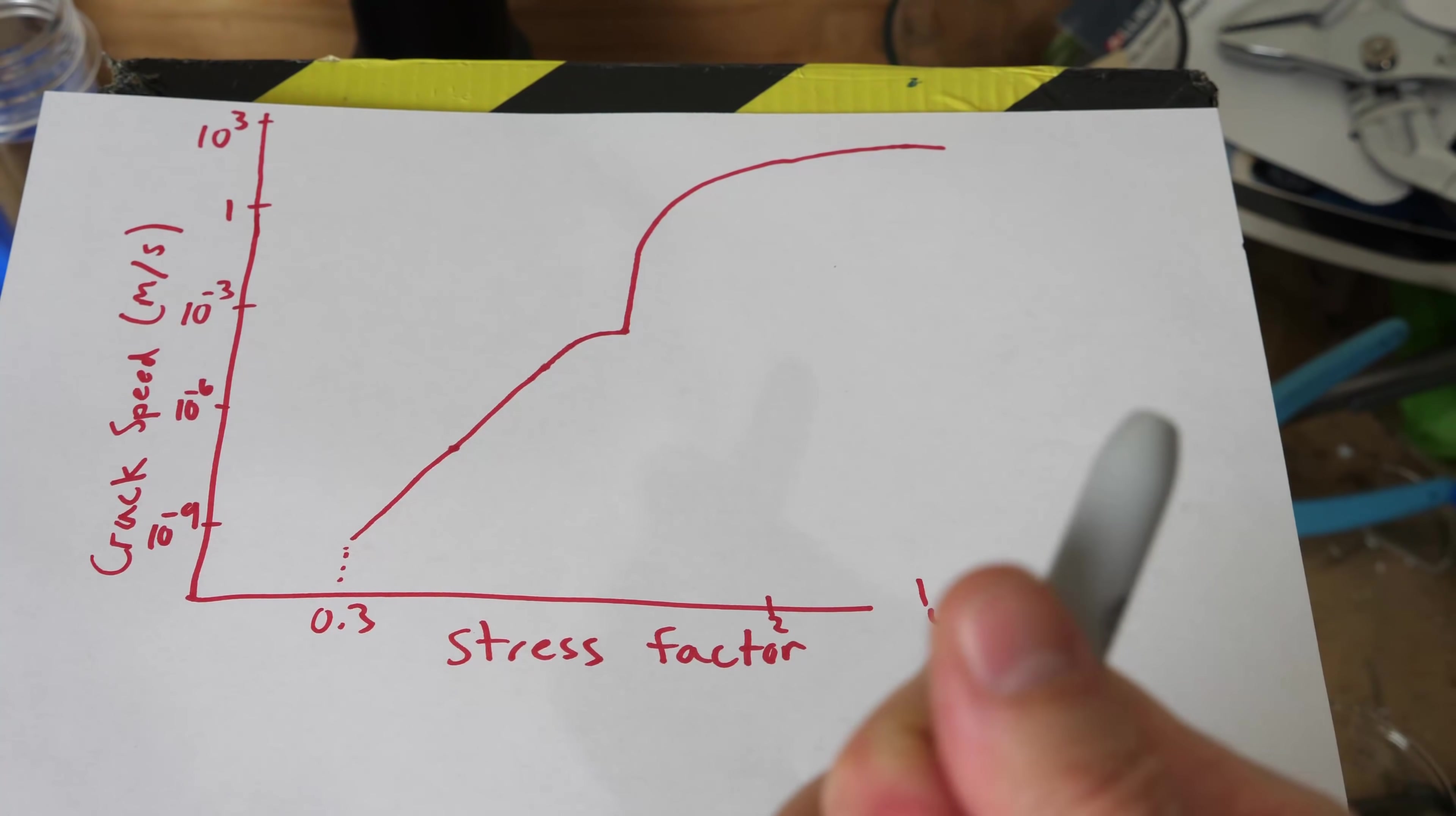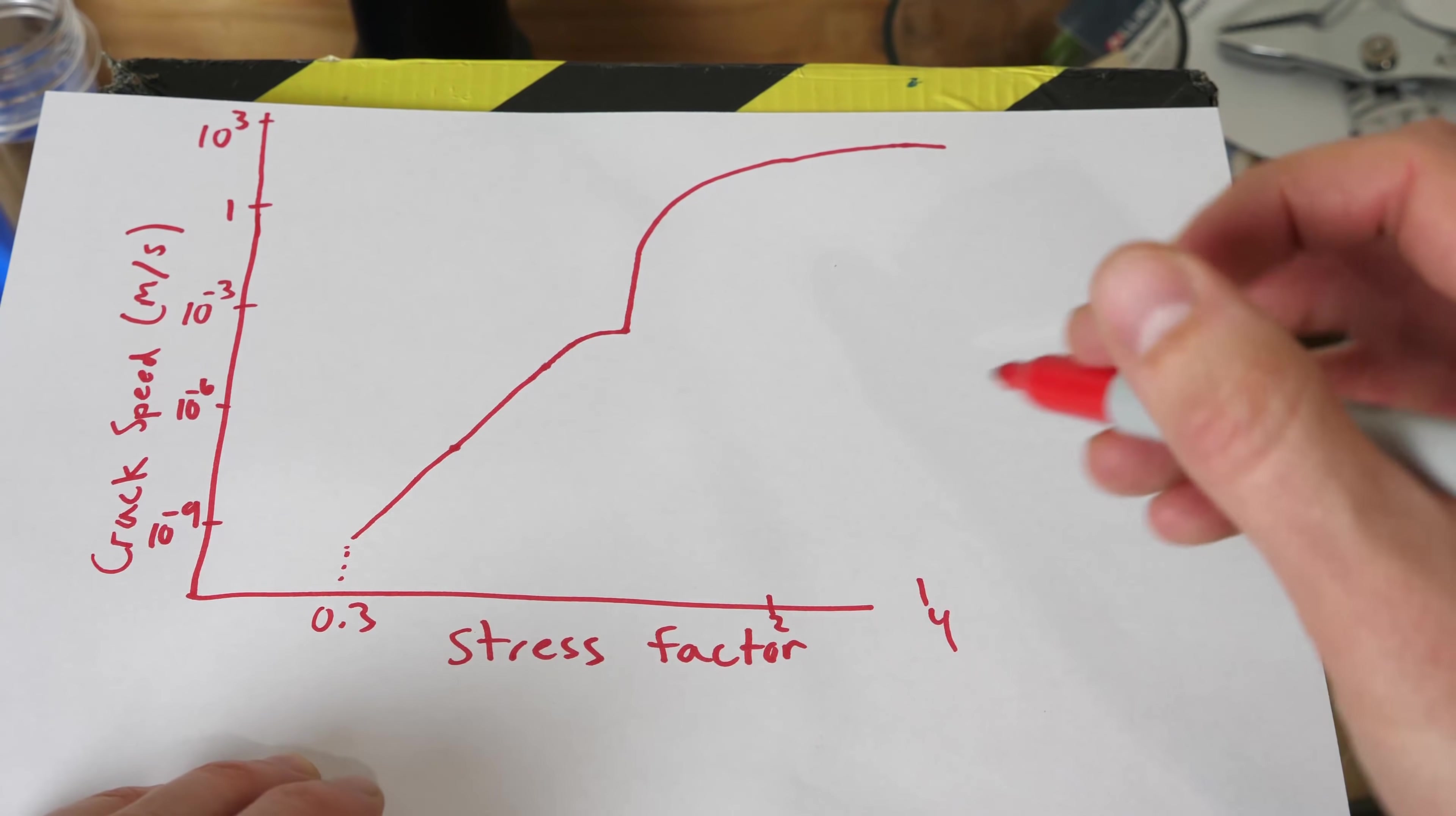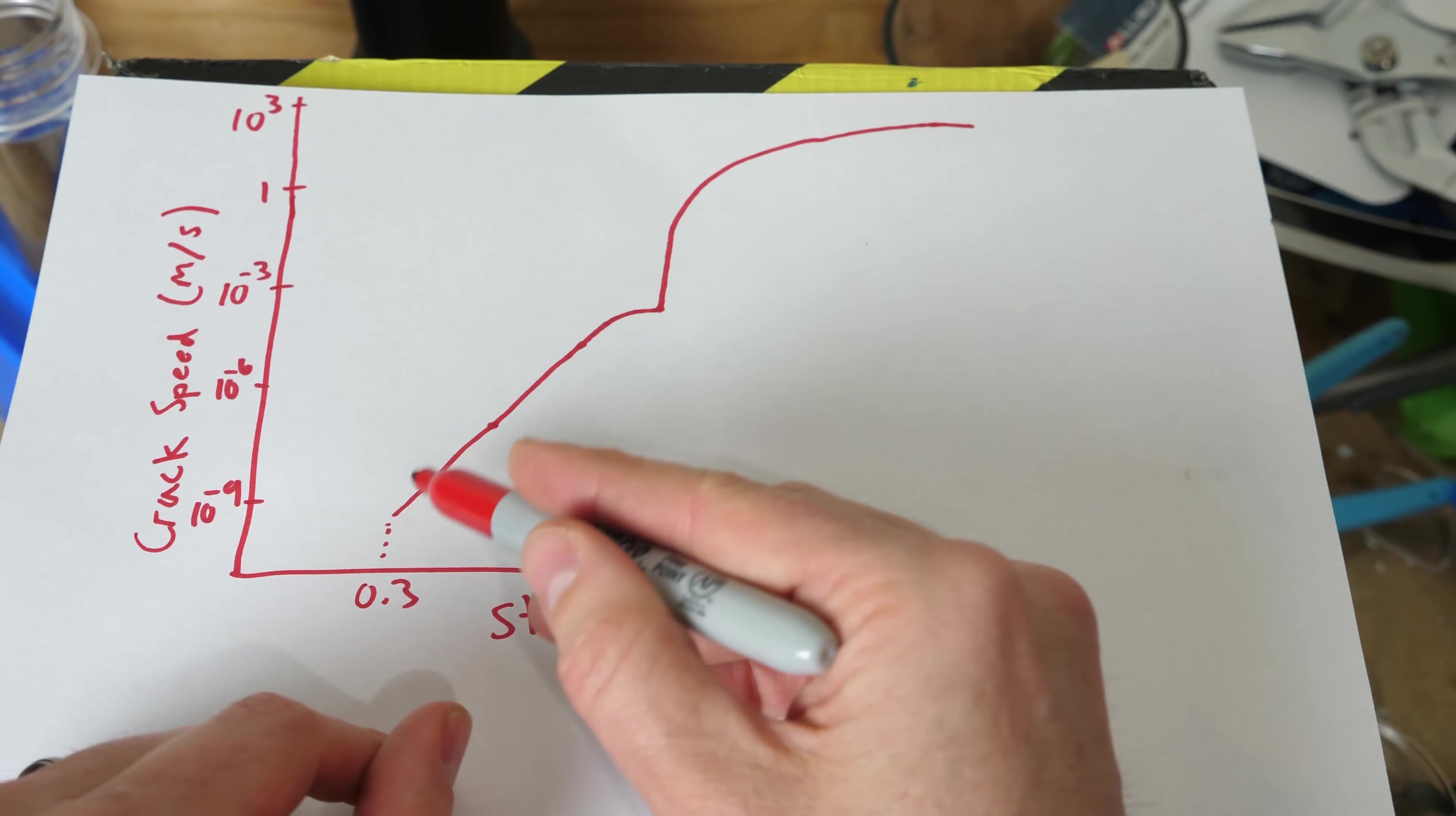In fact, the actual curve of glass breaking looks something like this. So this is the crack velocity on the y-axis here, and this is something called a stress factor. And this varies depending on the type of glass, but it also varies as the crack propagates through the glass. So you can see that at the very initial break point of glass, the crack velocity speed is very slow, 10 to the negative nine meters per second. But it only stays at that velocity for an extremely short amount of time.